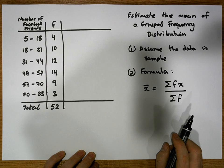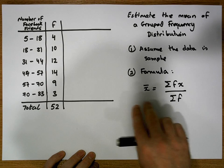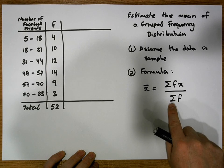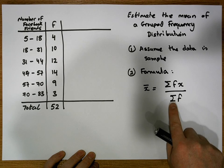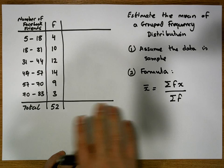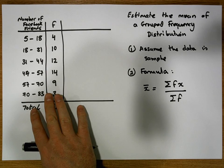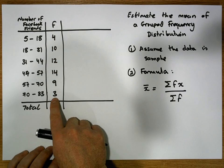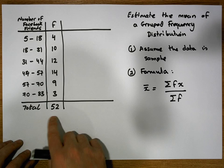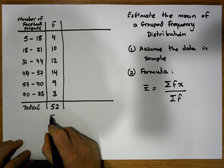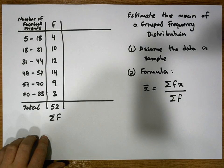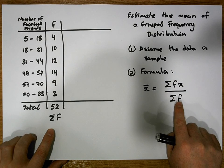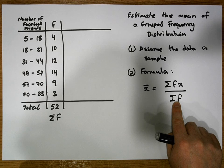To calculate the mean, we need two numbers: a numerator and a denominator. The denominator is straightforward—it's simply the sum of the frequency column in our grouped frequency distribution. The frequency column is labeled by a small f, and the sum of all the values here is 52. So to calculate the mean, we have half of the solution: it's 52 for the denominator.